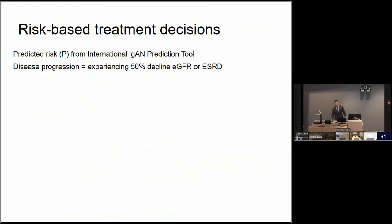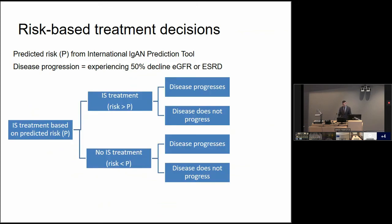Let's now talk about risk-based treatment decisions. When I talk about disease progression, I mean the risk of experiencing a 50% decline in GFR or ESRD — the same outcome used in the prediction tool. Instead of using proteinuria, we can envision evaluating an individual's risk against some threshold probability P. If a patient's risk is above that threshold, we might treat with immunosuppression; if below, we would not. In both scenarios, we may have been right or wrong — a disease might progress without treatment, or might not have progressed despite our treating it.